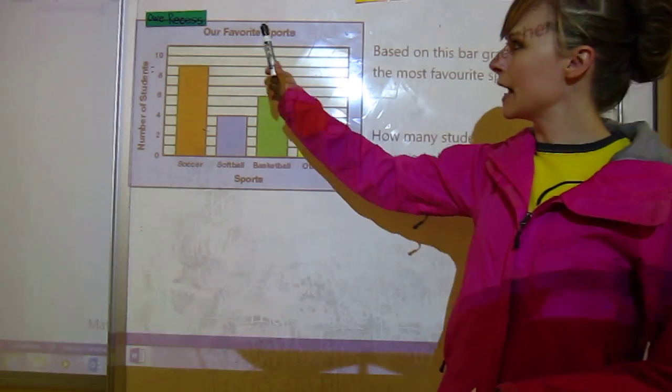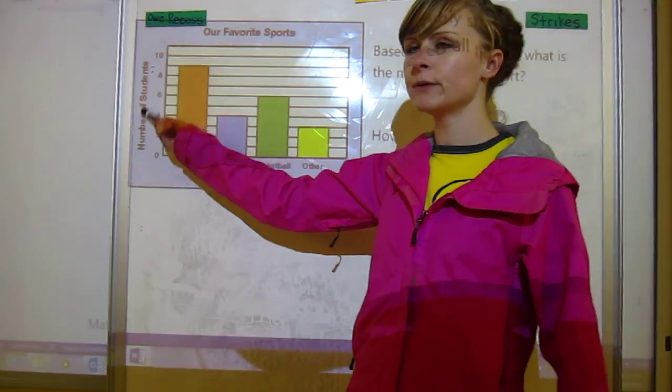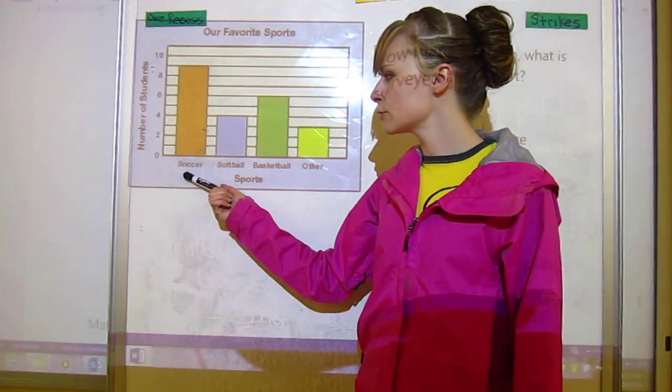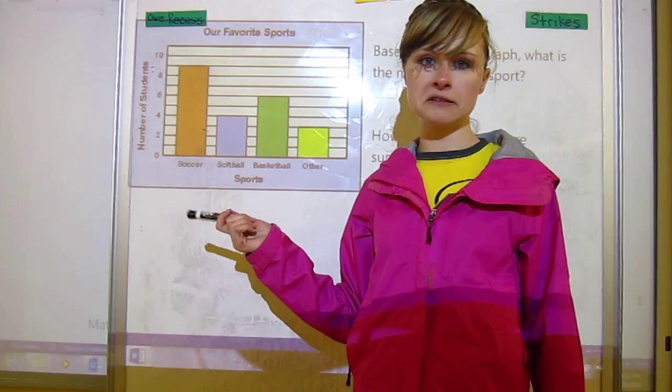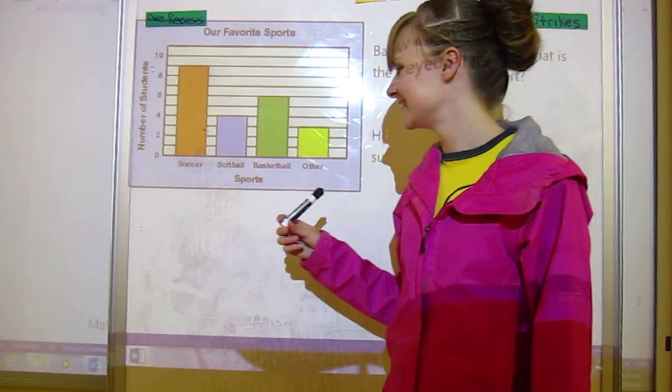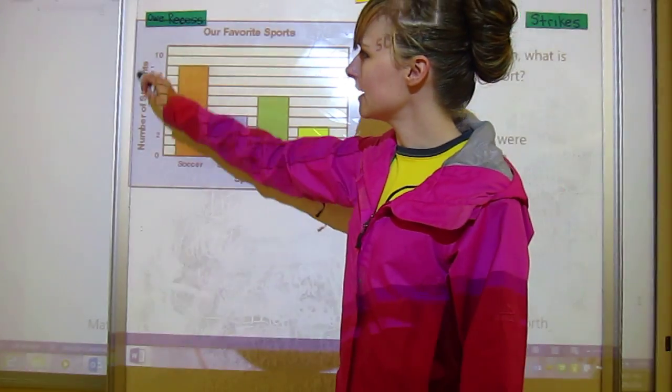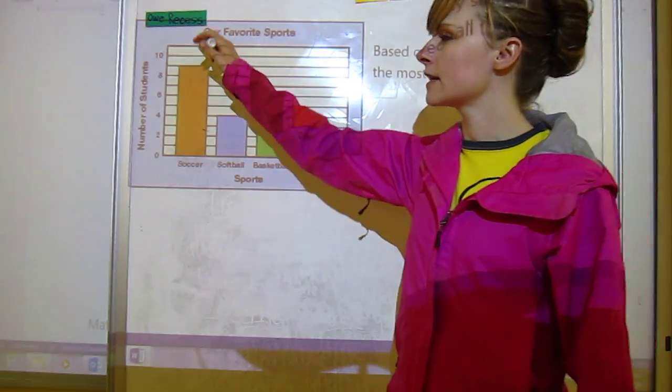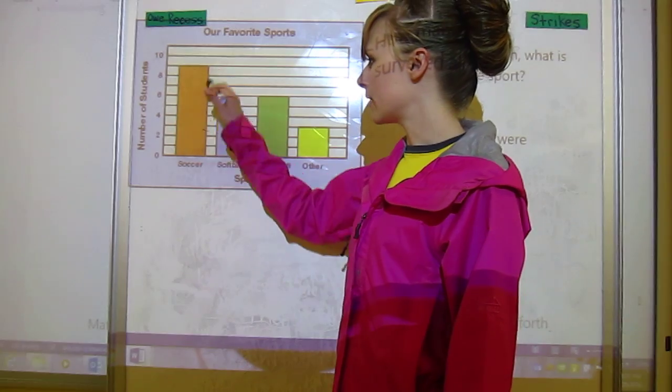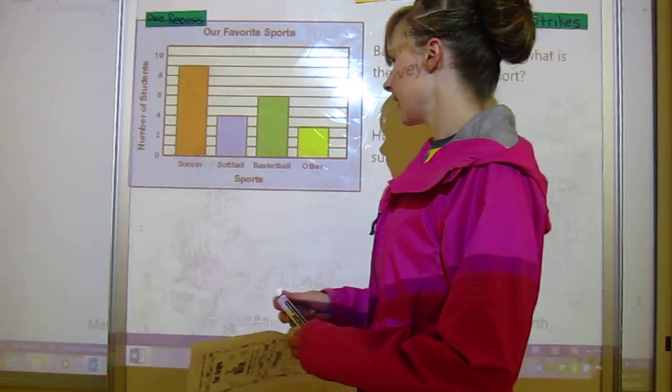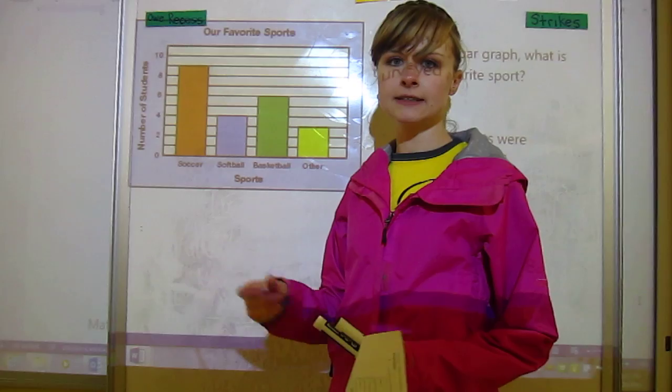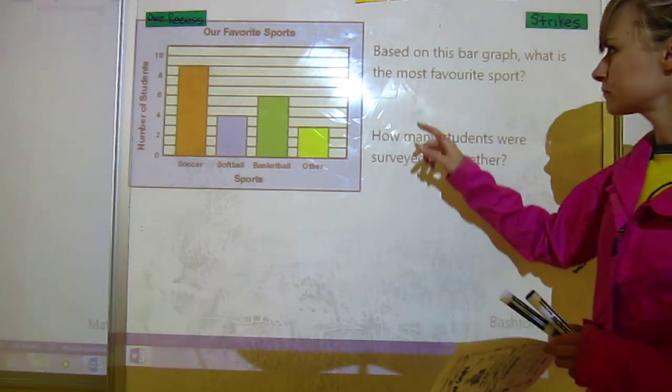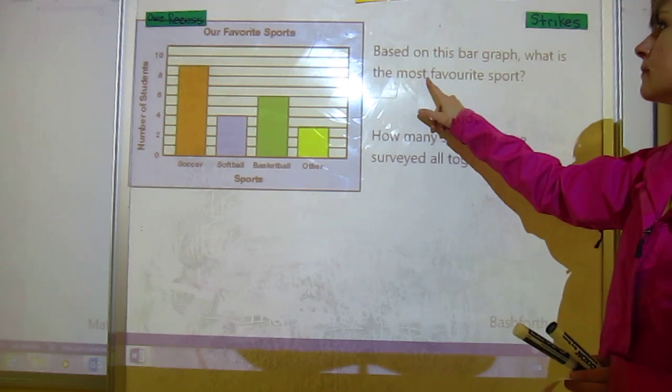Okay, so we're looking at our favorite sports and we've got number of students. So somebody must have surveyed some students and then the options were soccer, softball, basketball, or something else, maybe ultimate frisbee. You'll notice that they do have the labels like I said you need. So number of students is here, sports is here. We've got our title which is important. We've got our bar graphs. They don't necessarily need to be different colors like this, but it's fun if you want to do that.